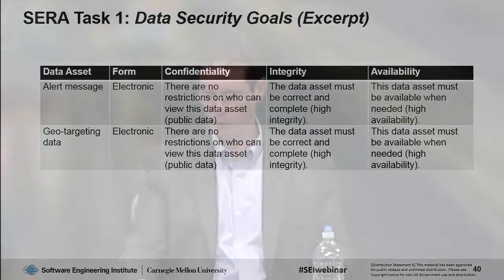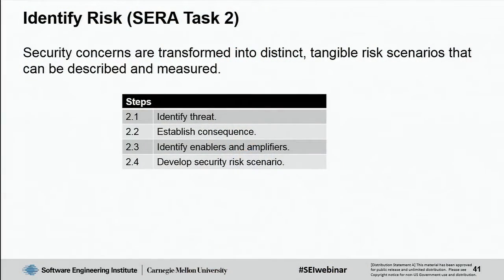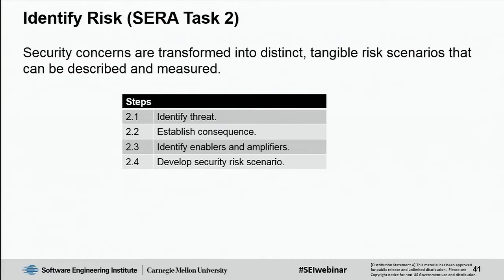Moving to Task 2, we start with identifying threats, then based on those threats look at the consequences, then examine what enables each threat to occur — the enablers — and what can make the consequences worse — the amplifiers. We then develop the security risk scenarios.